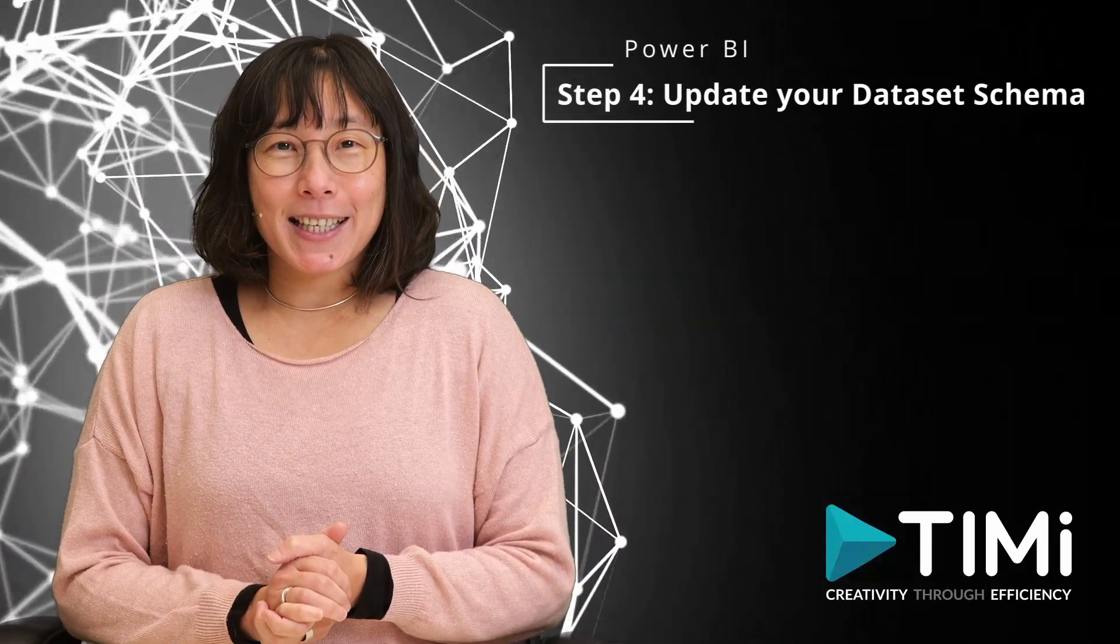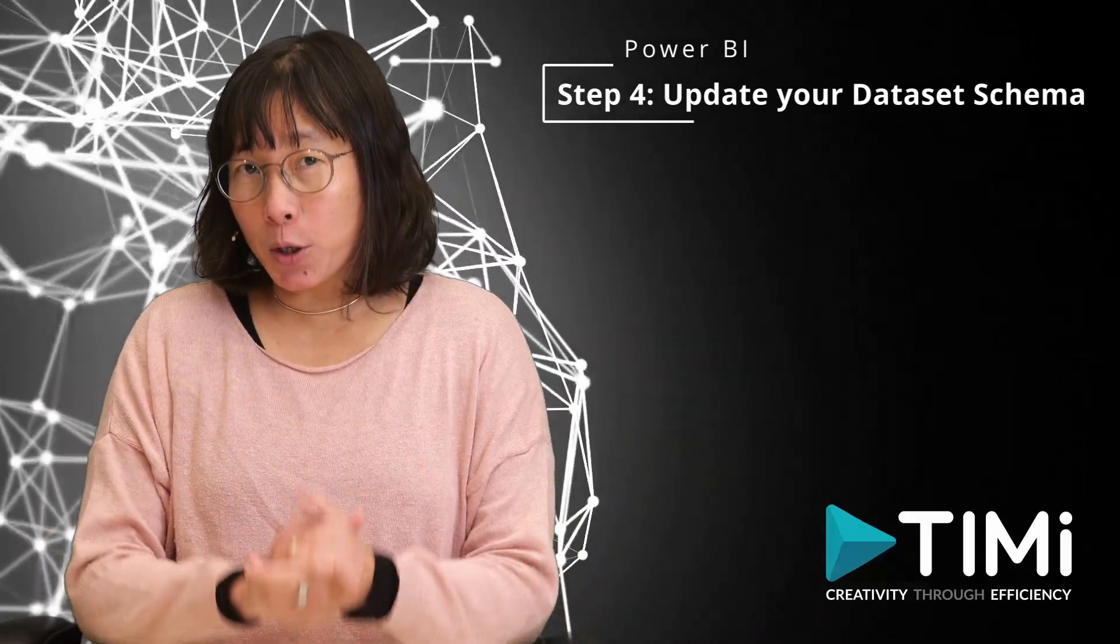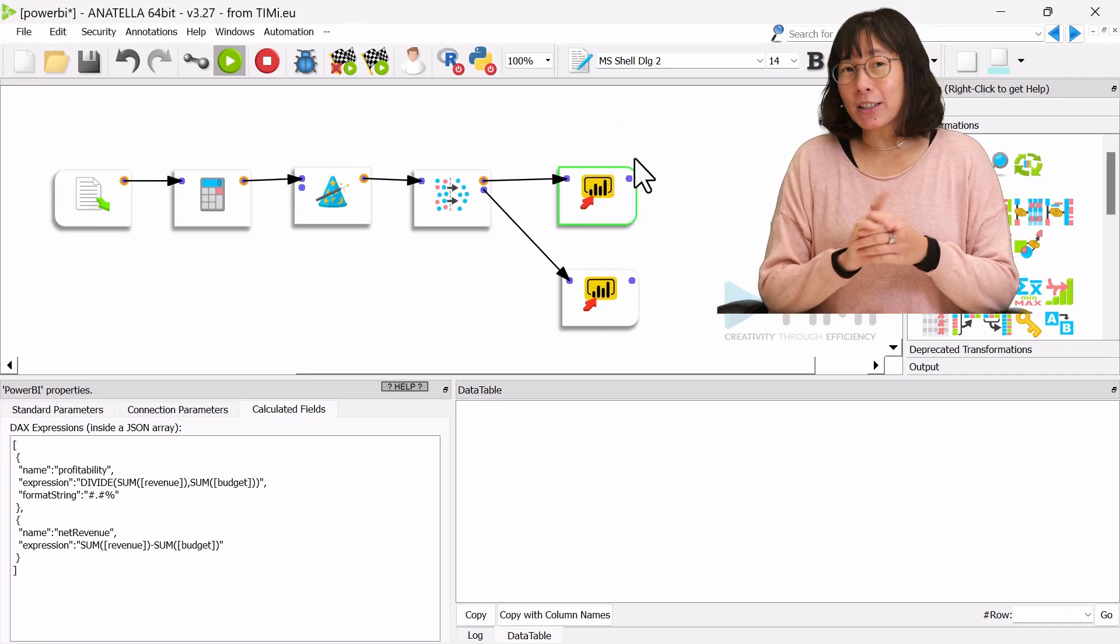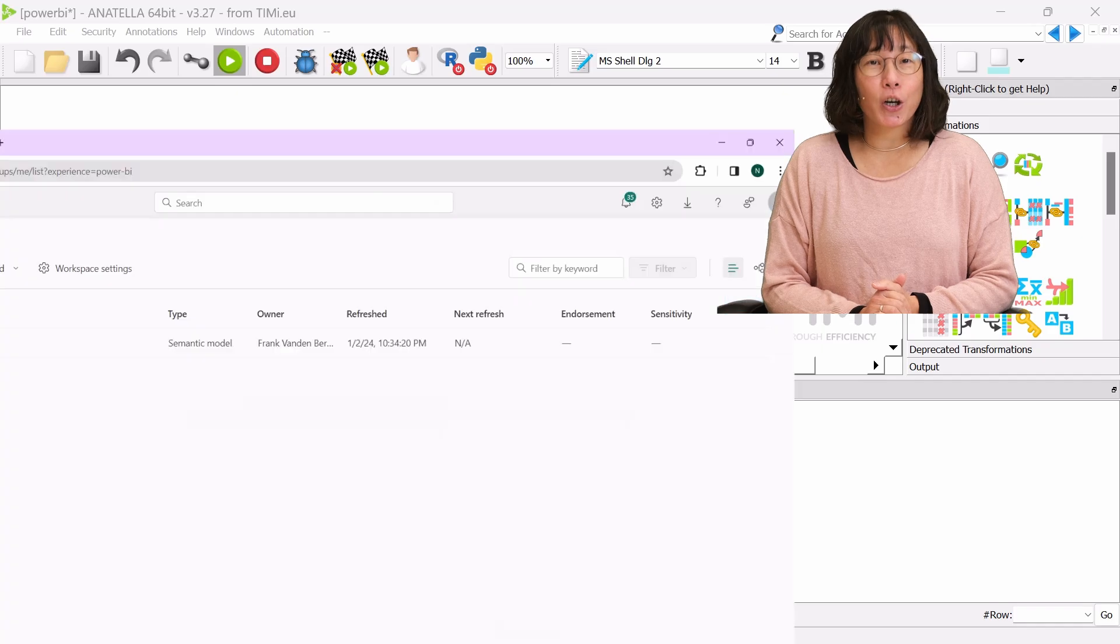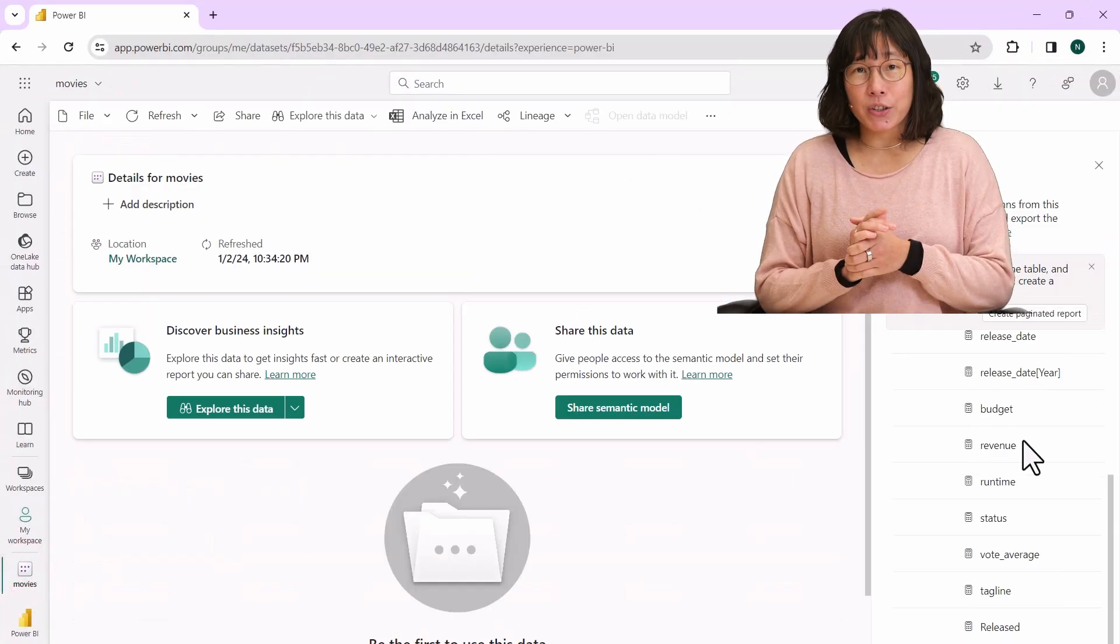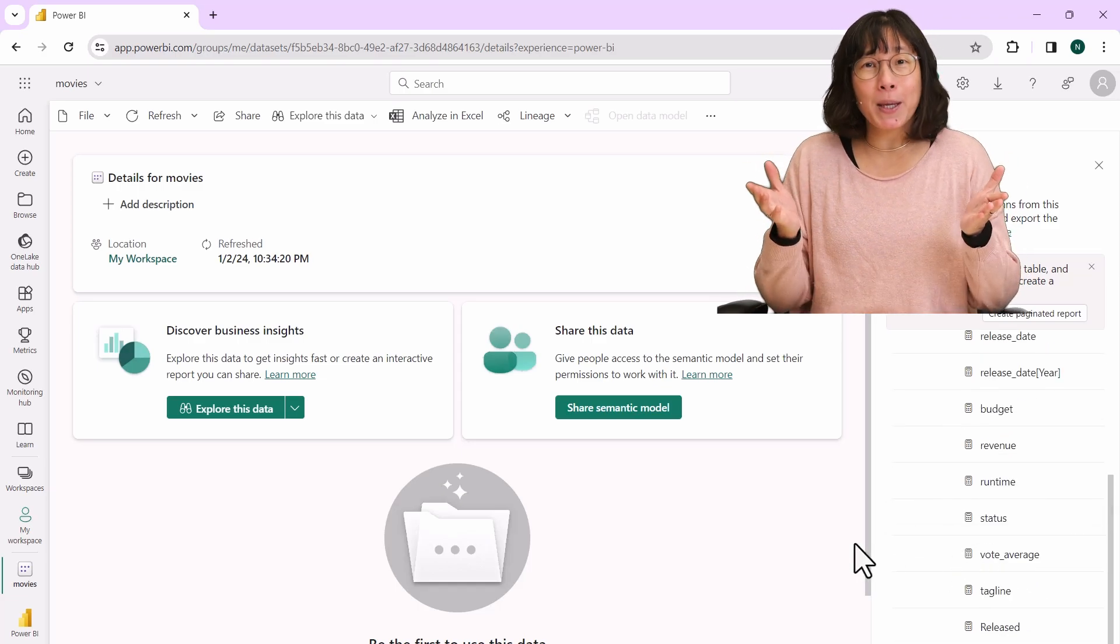Let's update your dataset with the calculated fields we created. When you run the Power BI box in Anatella after making changes in the table schema, you will not see updates on your Power BI webpage. Your new changes are ignored. Here, we cannot see our new calculated fields. What does it mean?